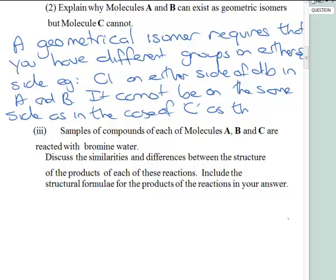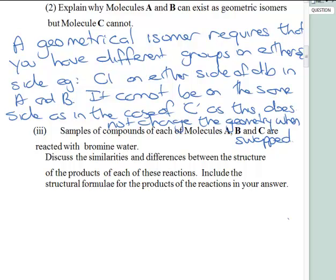Because as this does not change the geometry when swapped. That's the main reason. You do need a double bond of course and but you do also need to have different groups on either side that cannot be on the same side.